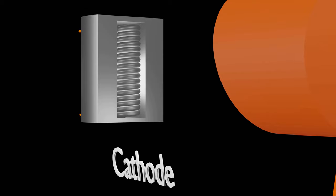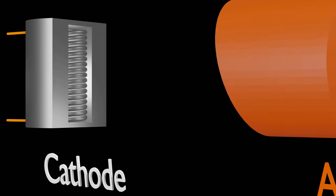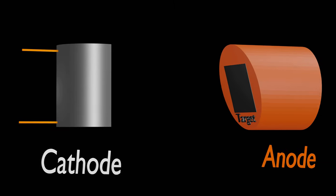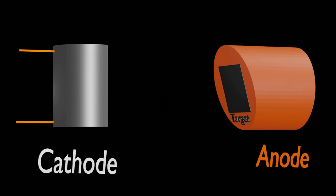In the last video, we discussed about line focus principle and understood reduction of anode angle improved image quality by reducing geometrical unsharpness.